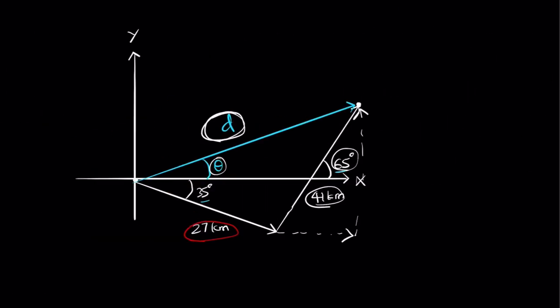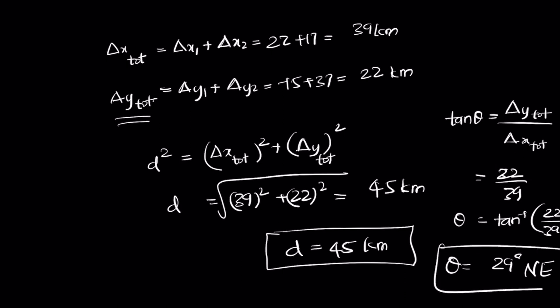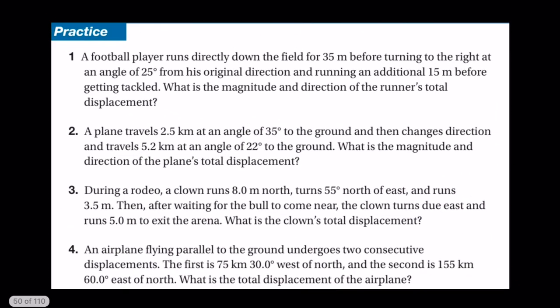This is how you solve problems when vectors are at two different angles: resolve each vector into x and y components, sum the components separately, then use the Pythagorean theorem for magnitude and the tangent function for direction. Pause the video and try to solve the practice problem using the same principles.